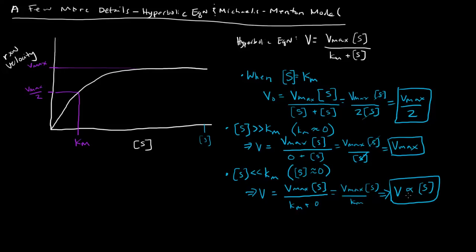And that makes sense. If we have a very small concentration of substrate, much less than the Km, we would expect there to be a linear, direct relationship. I hope those few details helped you understand the material a little bit better. Thanks for watching.